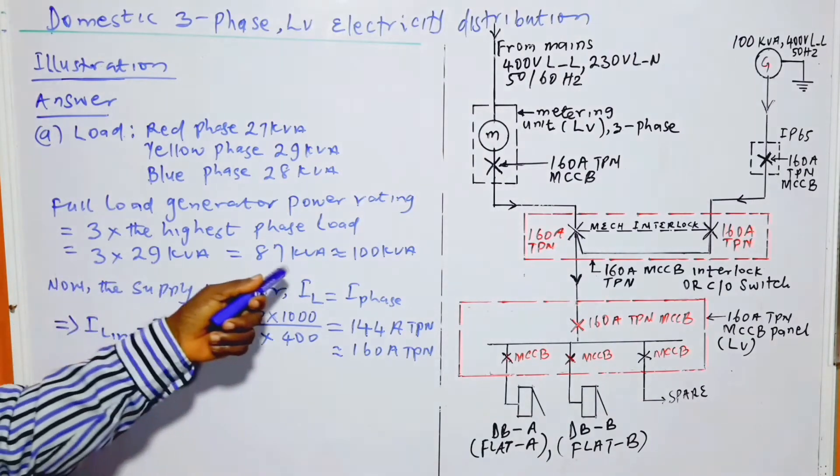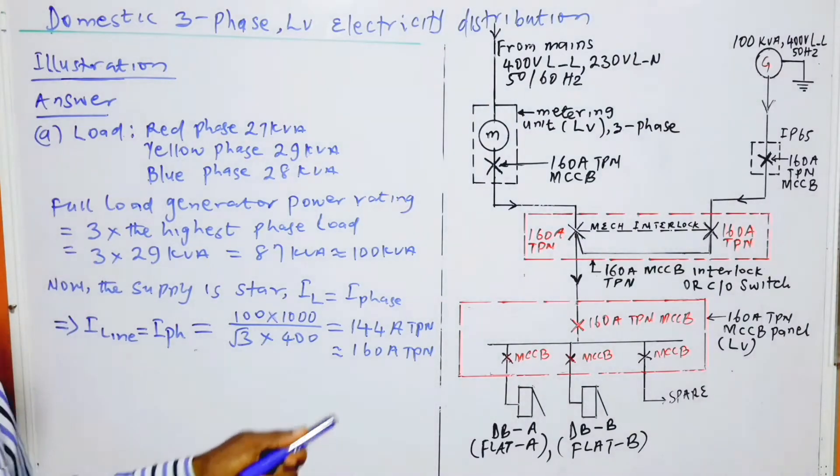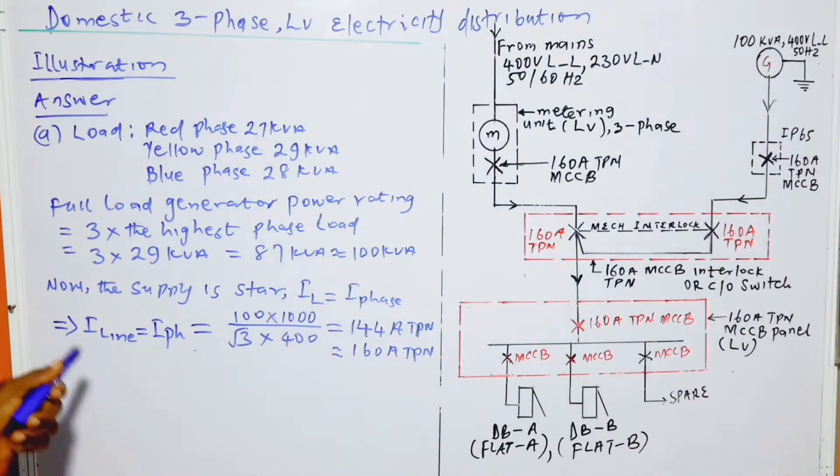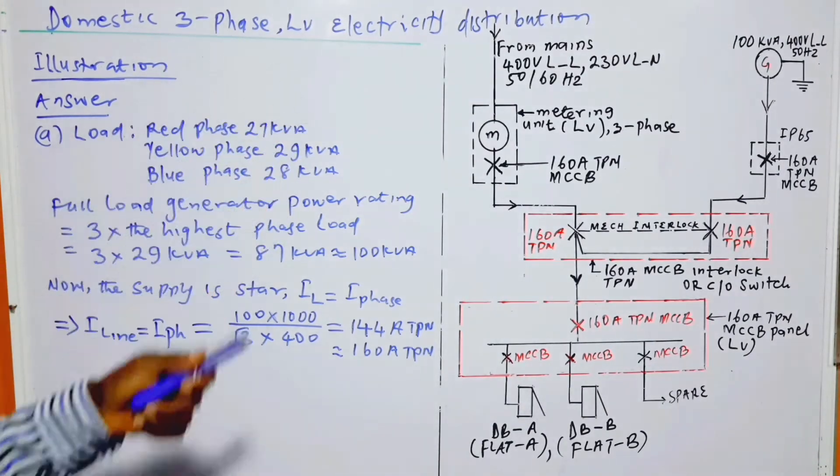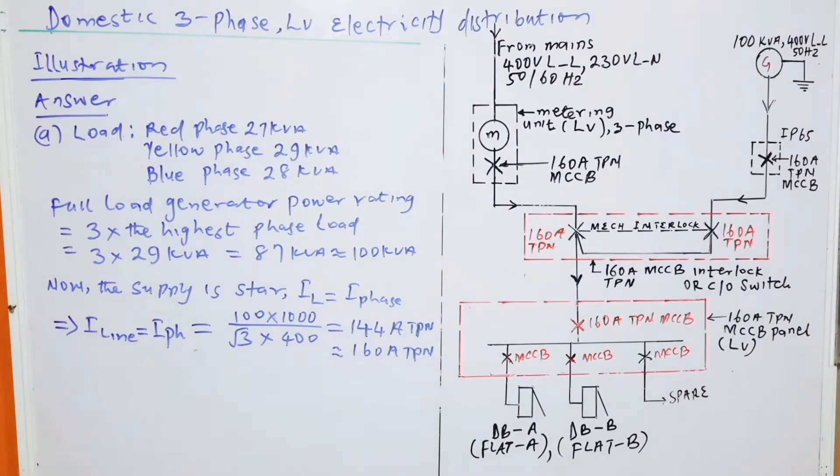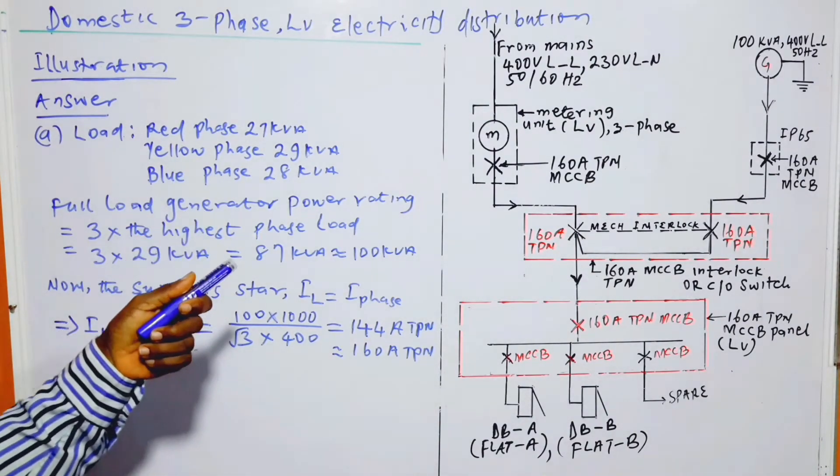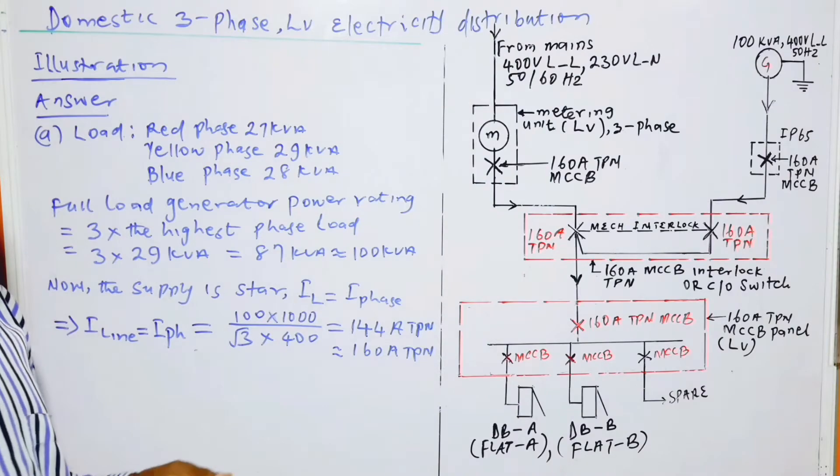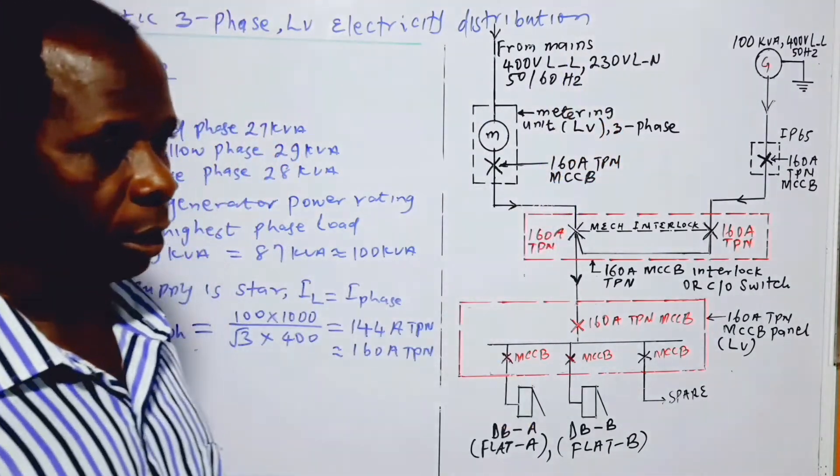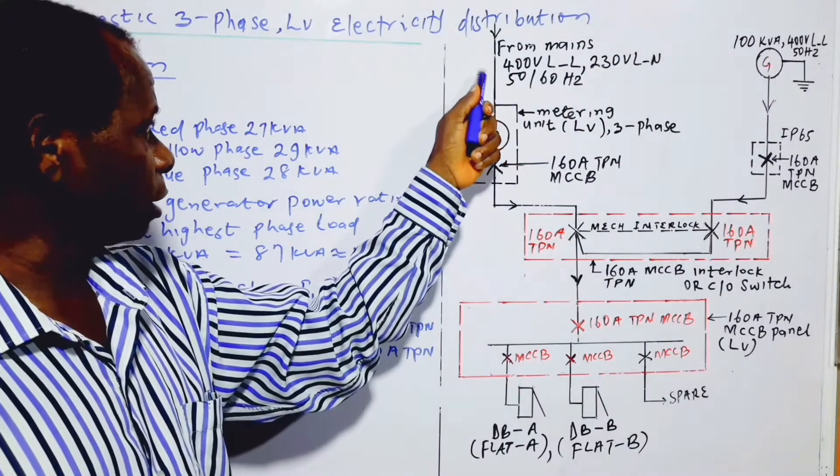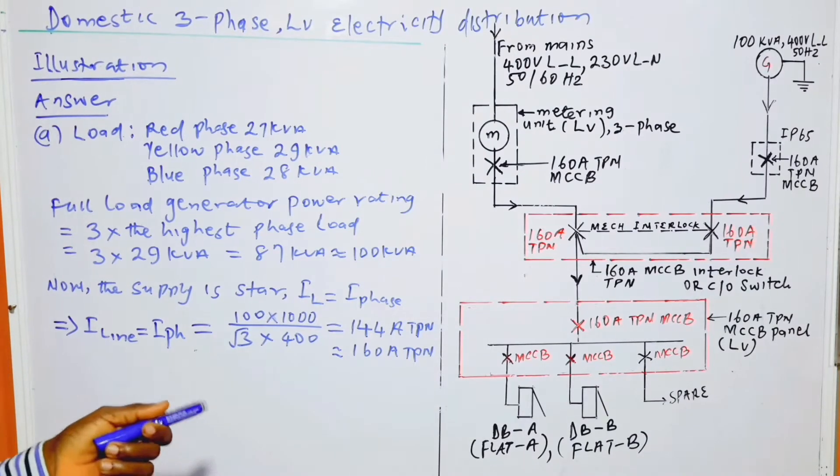With that, you have the full load generator power rating of 100 kVA. Now, the supply is star. Since we have 400 volts line to line and 230 volts line to neutral, just as we have here, this indicates that the supply is star connection.